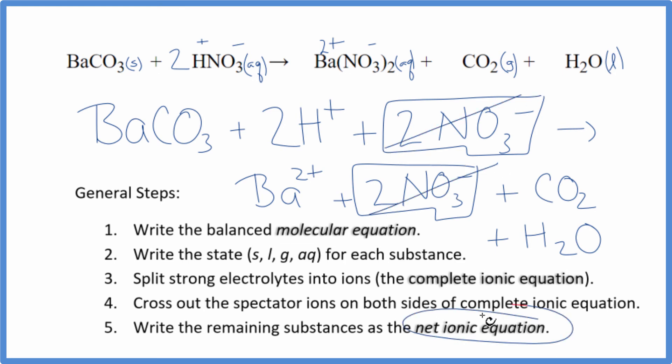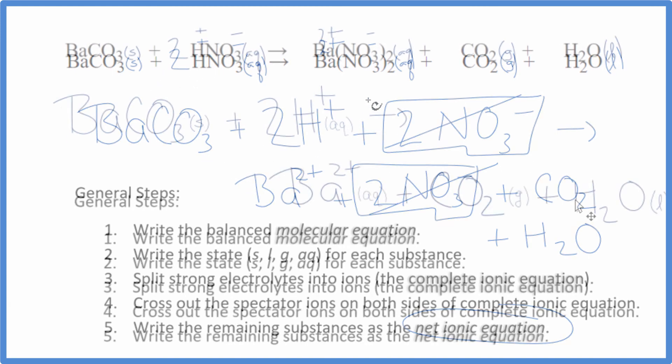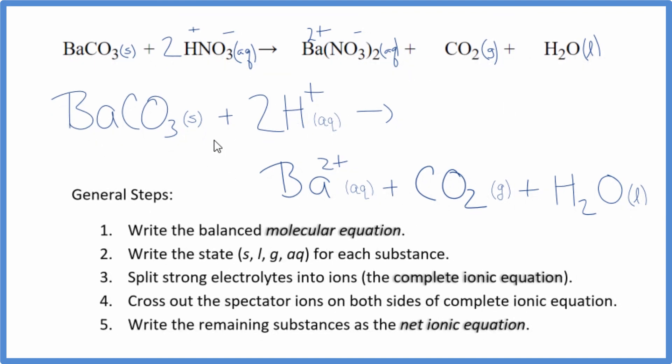That leaves us with the net ionic equation for barium carbonate plus nitric acid. I'll clean this up, write the states, and we'll have our net ionic equation. So this is the balanced net ionic equation for BaCO3 plus HNO3.